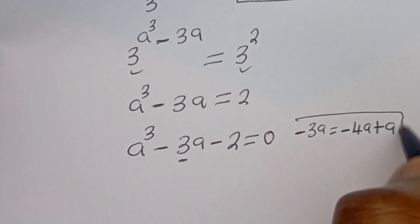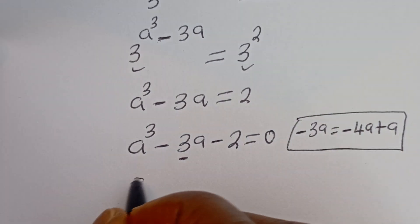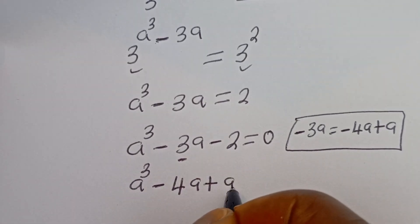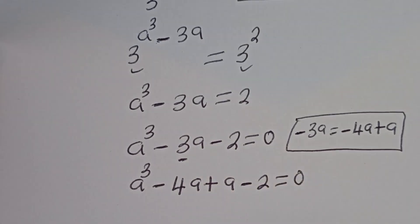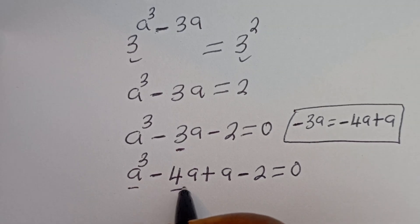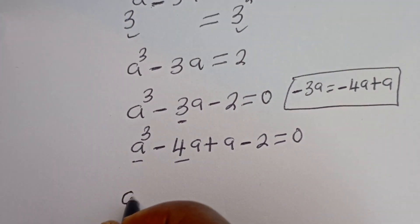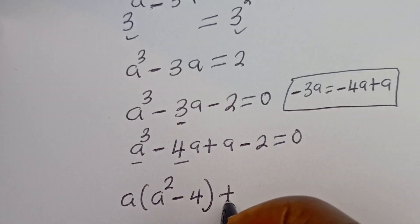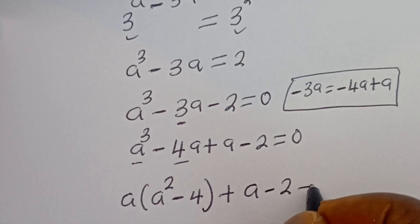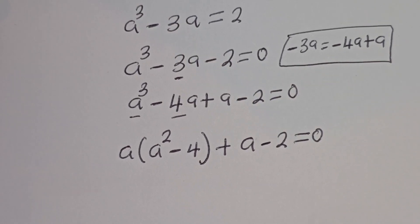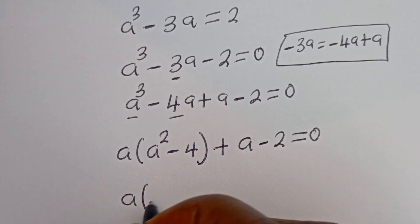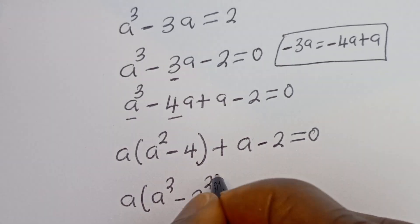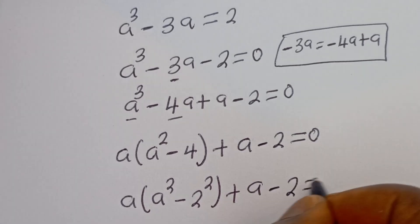We can substitute here. We have A to the power of 3 minus 4A plus A minus 2 is equal to 0. Now here we can factor A out. We have A bracket A squared minus 4, plus A minus 2 is equal to 0. This minus 4 can be written as minus 2 squared, plus A minus 2 is equal to 0.